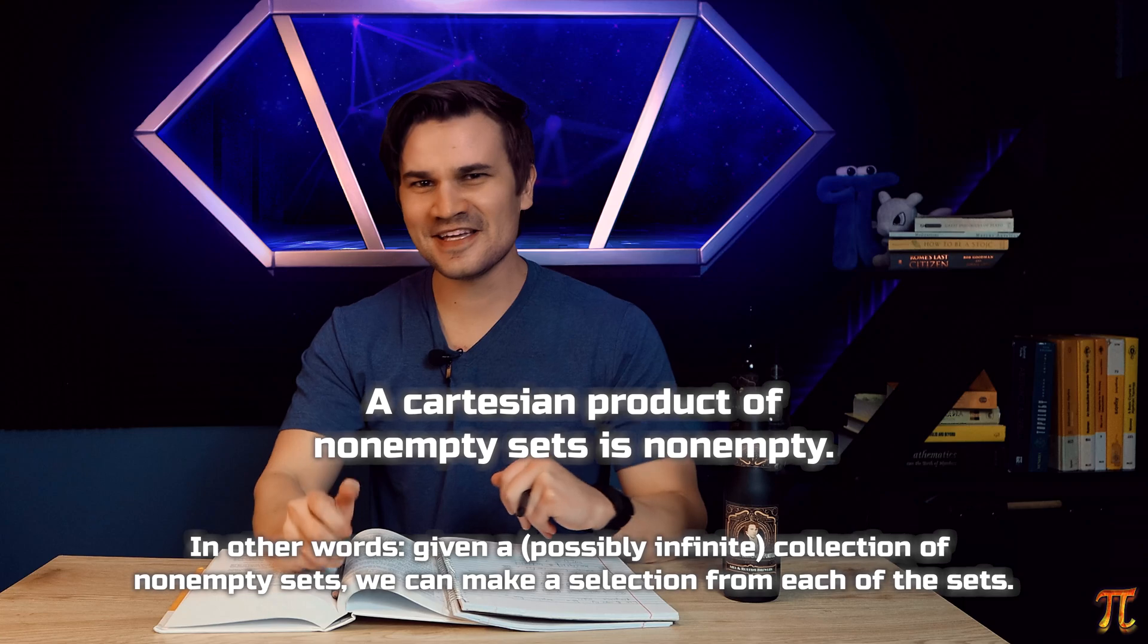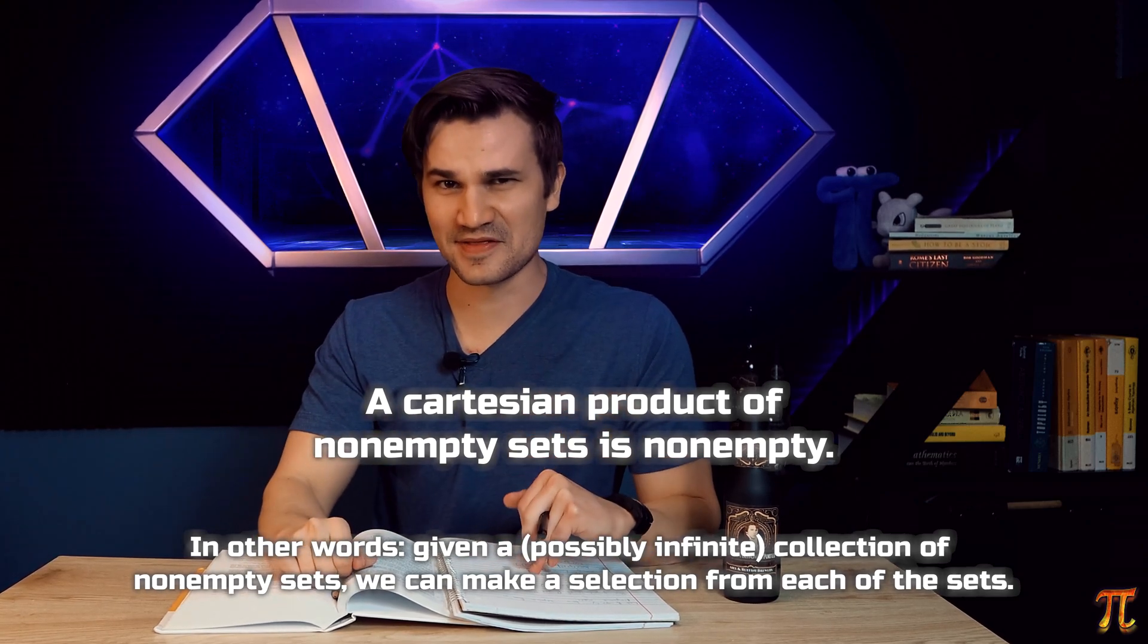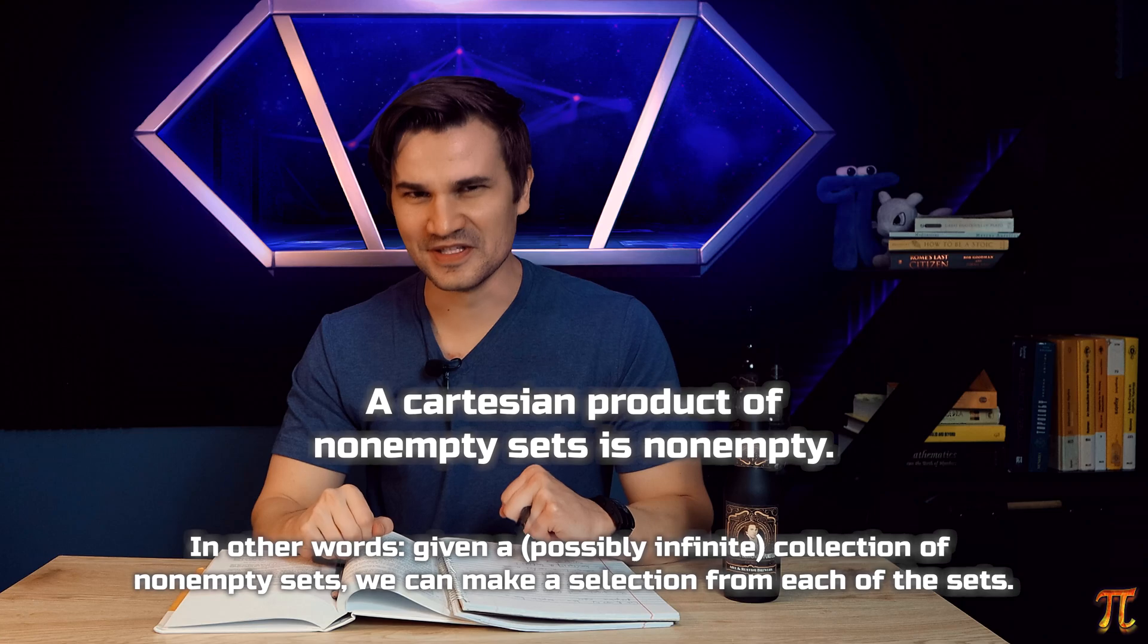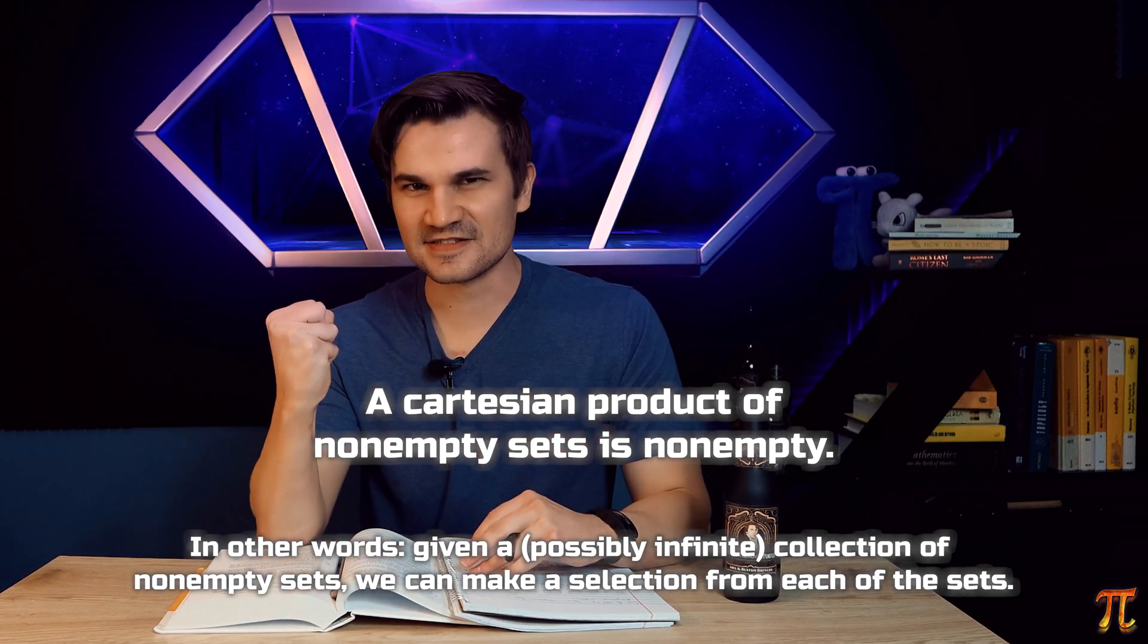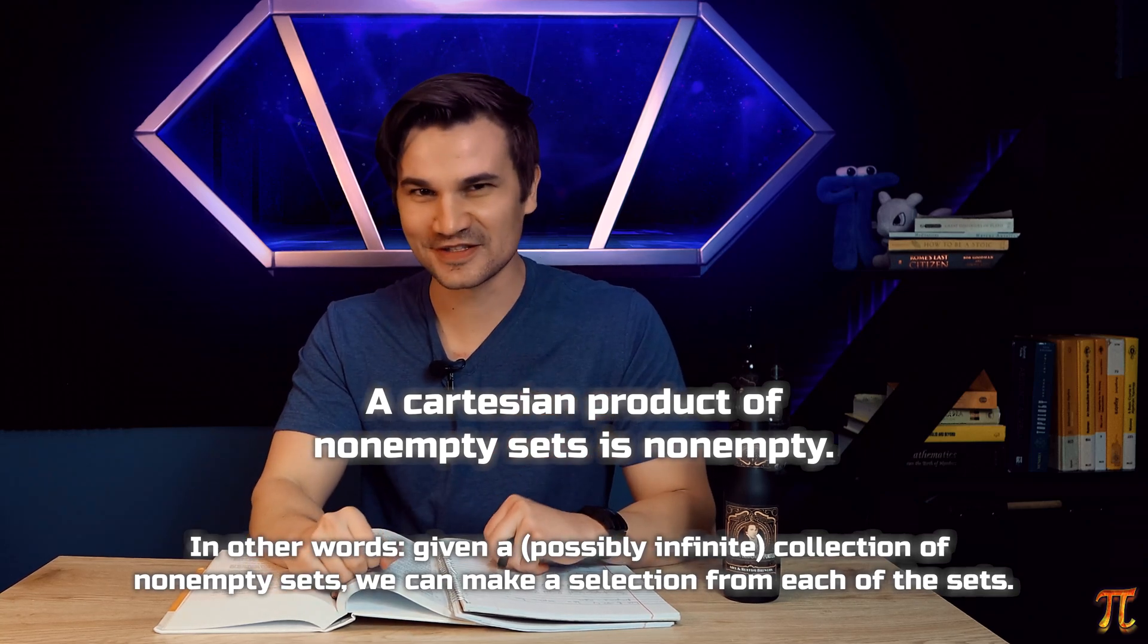But there's nothing in the axioms of set theory, the standard axioms of set theory, that actually allows us to do this. The mark of the axiom of choice is that it allows us to affirm the existence of mathematical objects without explicitly constructing them.